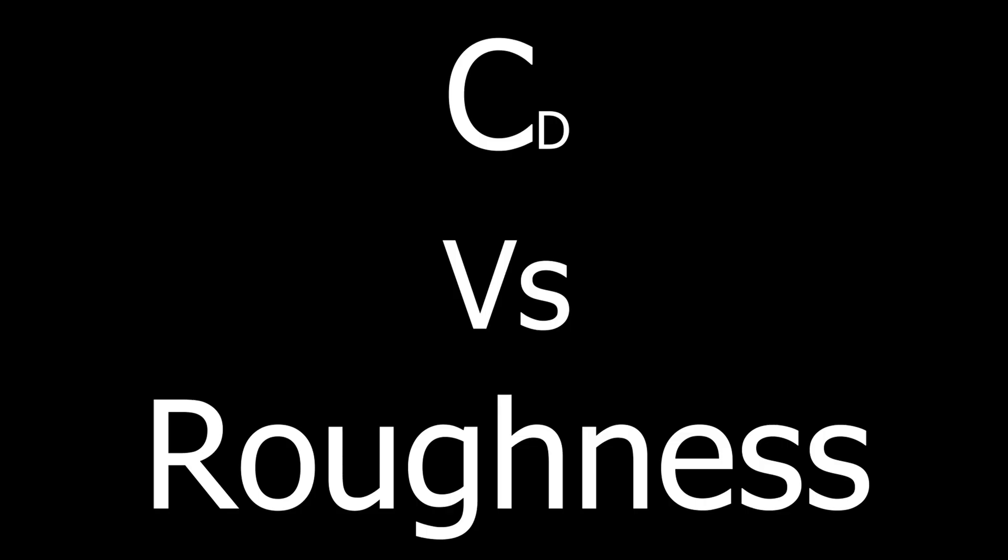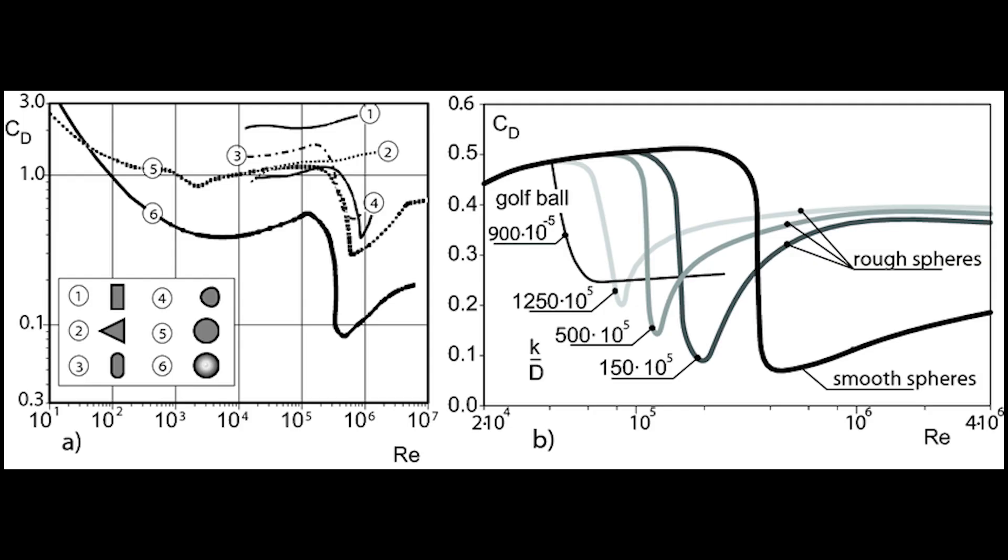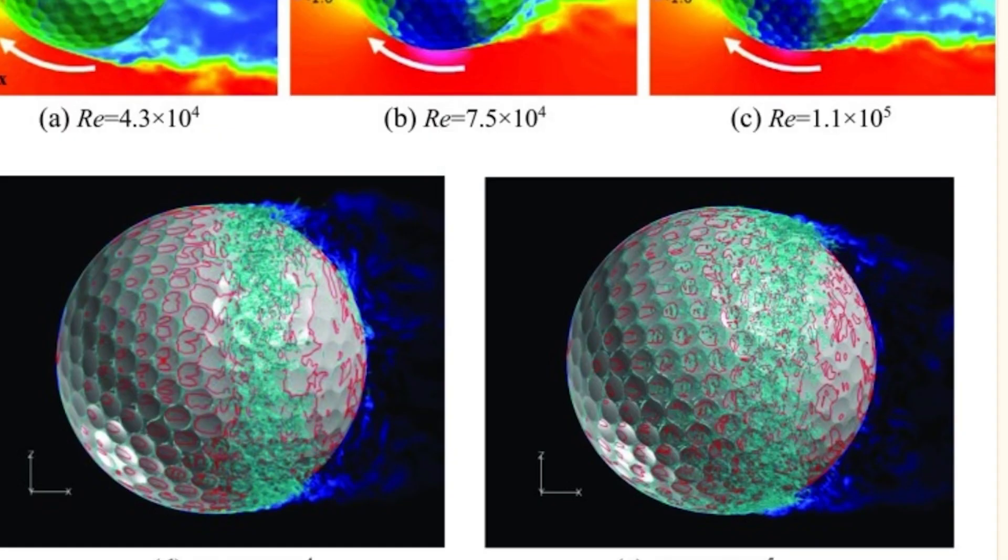Drag coefficient and relative roughness: Projectiles have a sweet speed bracket in which they experience lower drag. This speed bracket can be moved to lower or higher speeds by changing the roughness of the surface of the projectile. This is why golf balls are dimpled.